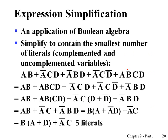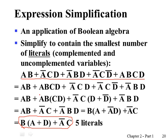We can apply Boolean algebra to simplify expressions using Boolean algebra properties, identities, and laws. Given a complex expression with many variables, applying these properties step by step, we can show it is equivalent to a simpler form. By simplifying, we achieve a goal called hardware optimization, which will be discussed in detail in later chapters.